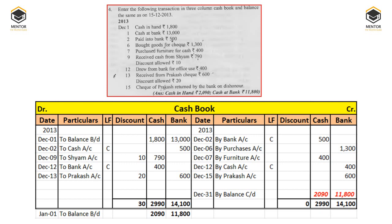We then closed the account. The debit side was more in both cash and bank columns, so the balancing figure is 'by balance carried down' on the last day of the month: 2,090 in cash and 11,800 in bank. This balance is then shown as 'to balance brought down' on January 1st: 2,090 and 11,800. For the discount columns, we made the totals — discount allowed is 30 rupees; discount received had no entries.